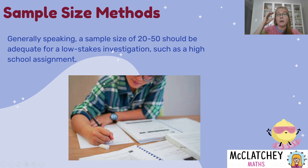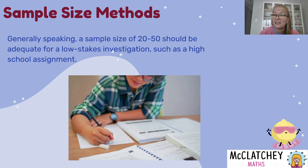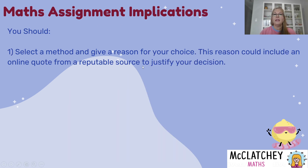As a rough guide, for low-stakes situations like a high school or university assignment, a sample size of 20 to 50 is manageable. Below 20, you're unlikely to have something representative of your population. Above 50 can be difficult to hand-graph and hard to collect under a short timeline. Find the method that gives you something in that range.